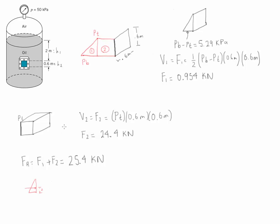This distance from the base is 0.2 meters. If it's 0.2 from the base, that means from the surface to here the value of y1 is equal to 2.4 meters. For the second cross-sectional area — the square — the centroid is at half, therefore at 0.3 meters.